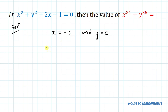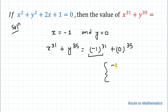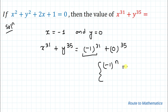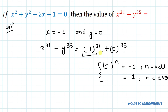We need to find x³¹ + y³⁵. Substituting: (−1)³¹ + 0³⁵. Applying the exponential law: (−1)ⁿ = −1 when n is odd, and +1 when n is even. Here n = 31, which is odd, so (−1)³¹ = −1. And 0 to the power of anything is 0. Therefore the answer is −1 + 0 = −1.